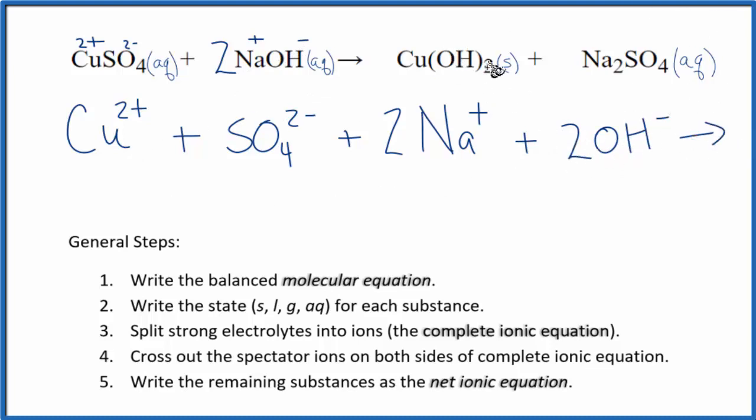In the products, this is a solid. So in net ionic equations, we're not going to break solids apart into their ions. They aren't apart into their ions in the solution. They've not dissolved. So they're a solid. We just write Cu(OH)2, copper 2 hydroxide.